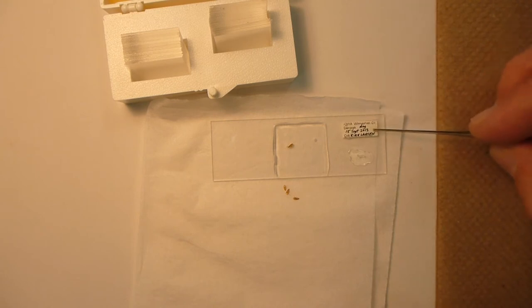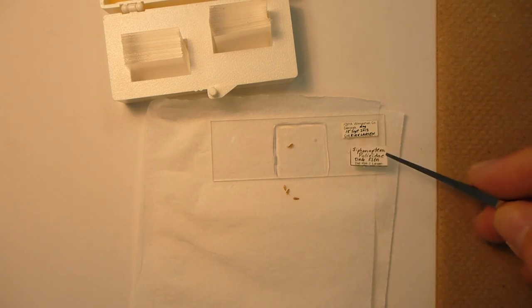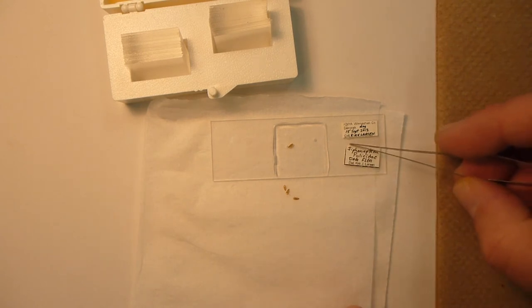And then we're simply going to glue our locality label in position. You make sure that you've already got it filled out. And then the same thing with your determination label, exactly what it is. So this happens to be a dog flea that was collected here in Decora off of my dog.